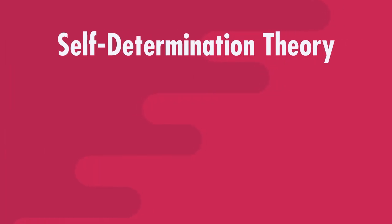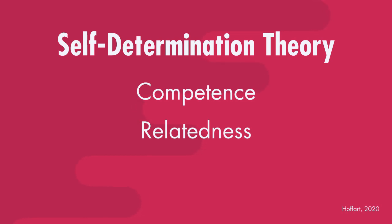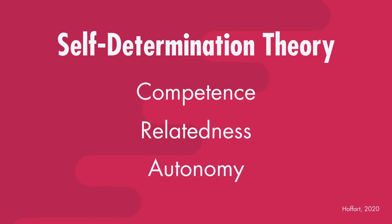Next we're going to look at self-determination theory. Deci and Ryan propose that motivation is based on three basic psychological needs. The first is competence — that's when you feel effective and competent in relation to whatever you're doing. The second is relatedness — that's when you feel cared for, you care for others, and you have a sense of belonging and feeling connected to others. And the last is autonomy — being self-directed, making your own choices and having control over your actions.